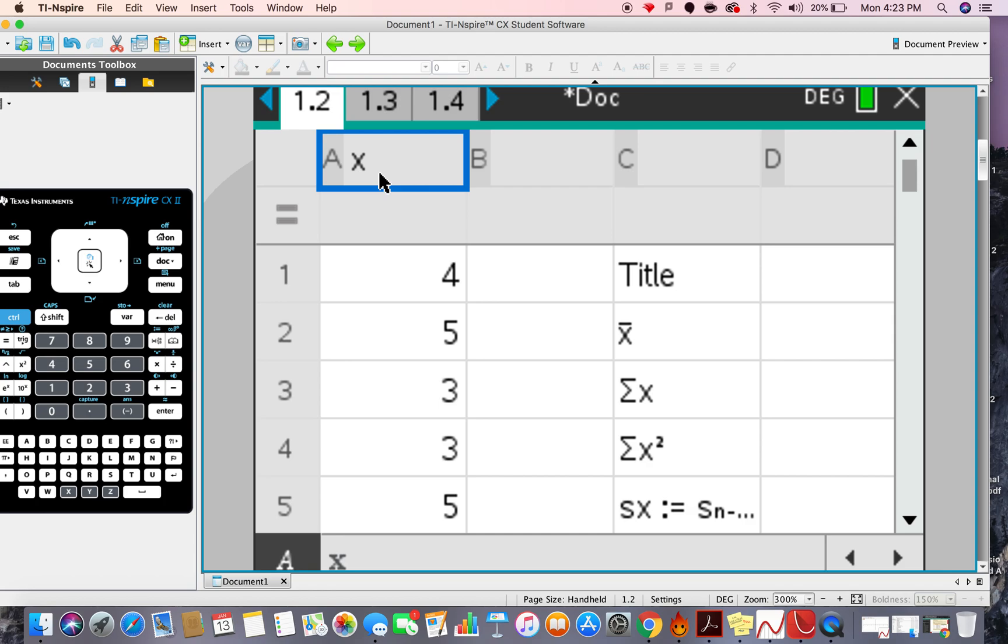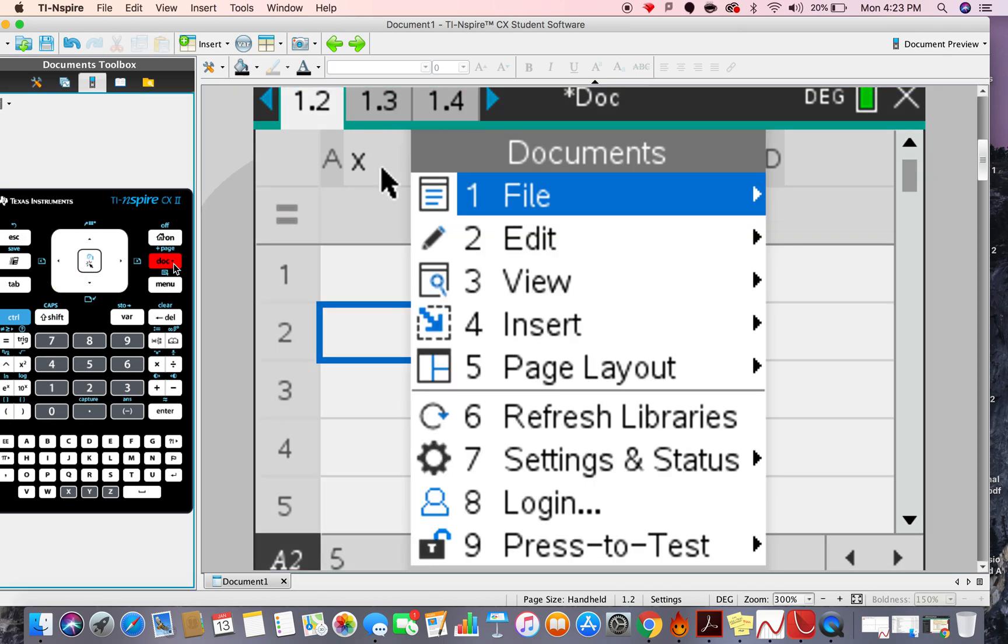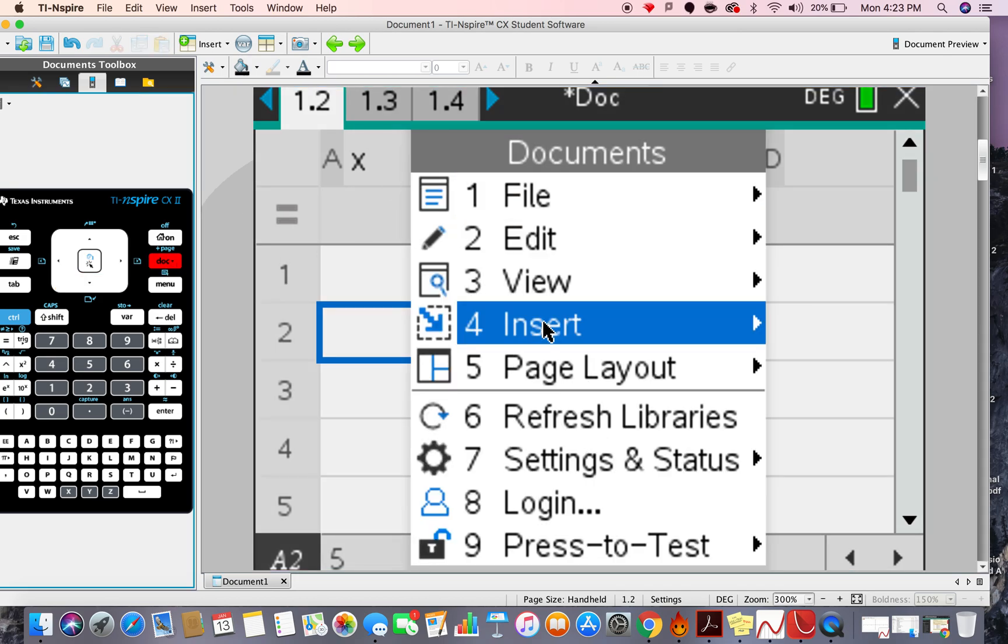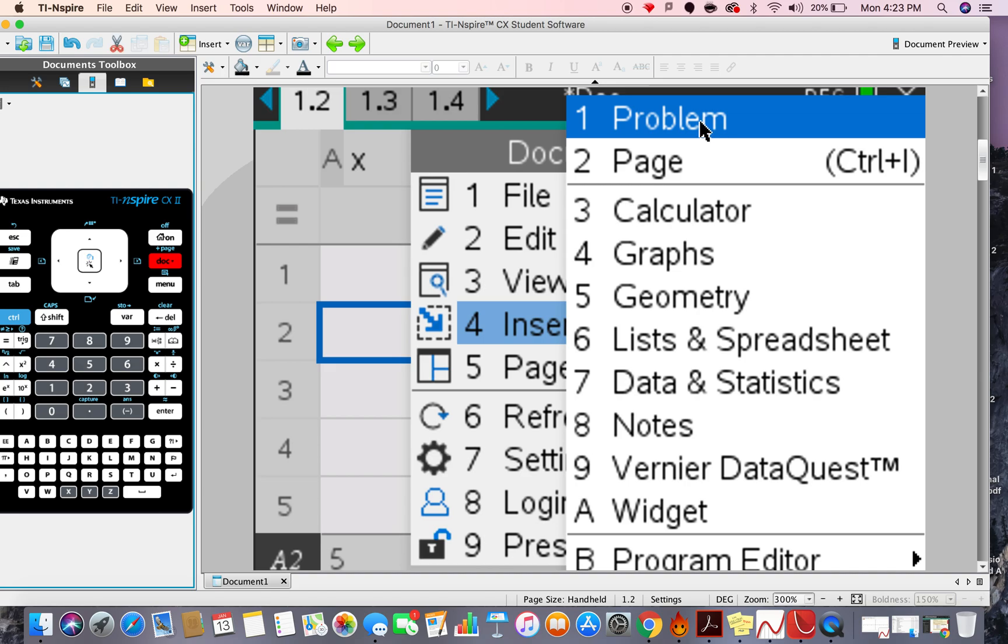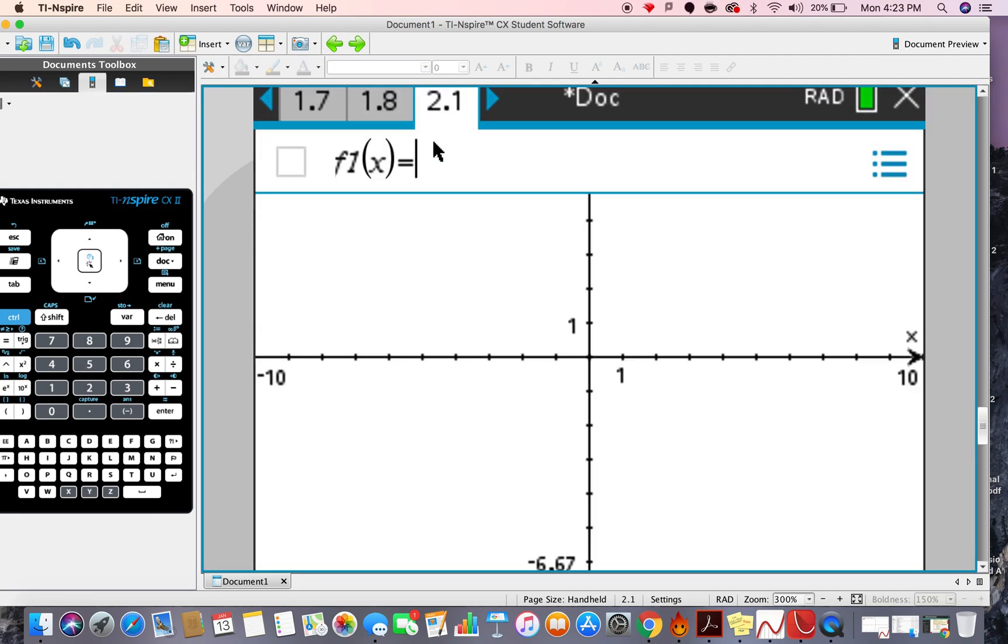But you see, I've already got this x being used here, and x is used in graphs as well, so I don't want to confuse the x's. So, best thing is doc, insert, and then a new problem. Now, when it goes to a new problem, I have a graph. Can you see it goes to a 2.1 here? So, all the 1 points are together, and that includes the spreadsheet and the previous analysis. The 2.1s, now this is a fresh start. So, I'm going to draw a graph.